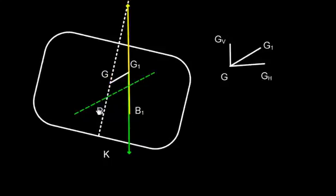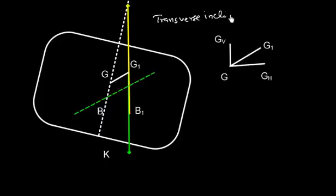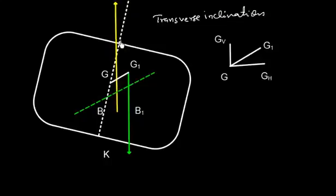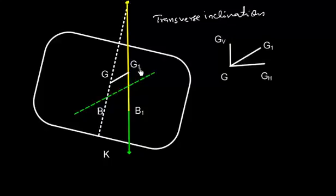Because of this list movement, the vessel will start inclining in a transverse direction — we will have transverse inclination — simply because the center of gravity is shifted from G to G1. The force of buoyancy will also follow, moving until it comes directly below G1. So B1 is the new center of buoyancy and G1 is the new center of gravity, and they will be in the same vertical line.